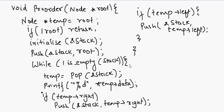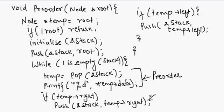This is how preorder traversal of a binary search tree works. We pop the element, print it, and since we are using a stack, we push the right child first and the left child second, so that the left child comes out first and the right child comes out next.